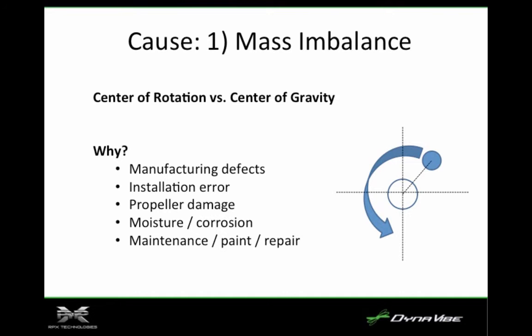We'll talk about some of the causes. We've got three major causes. The most significant is almost always mass imbalance, and that's where the center of rotation is not the same as the center of gravity. That basically means there's a mass error in the propeller, in the crankshaft, or one of the rotating components.